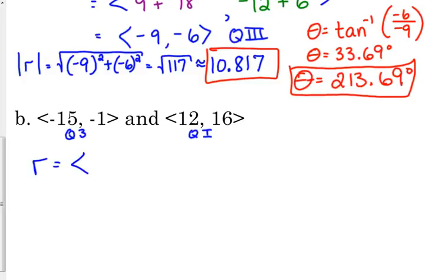R is equal to negative 15 plus 12, negative 1 plus 16, which is negative 3, positive 15. Y'all were right, it is in the second quadrant.